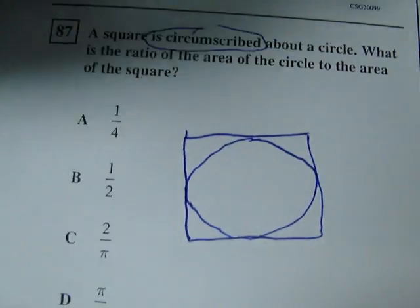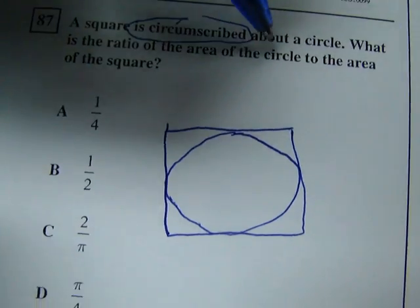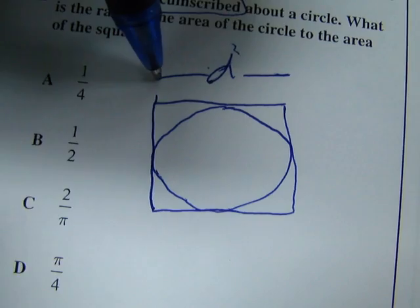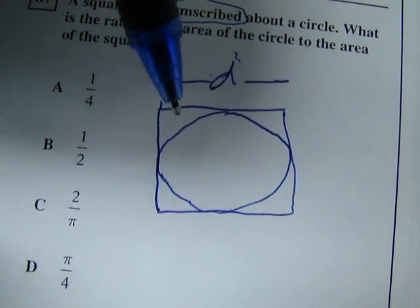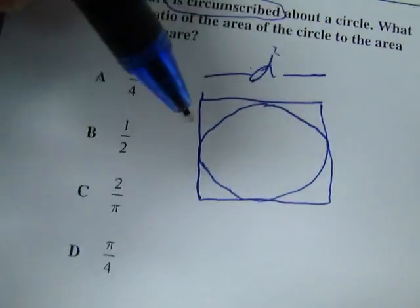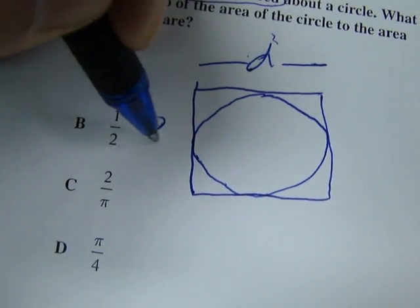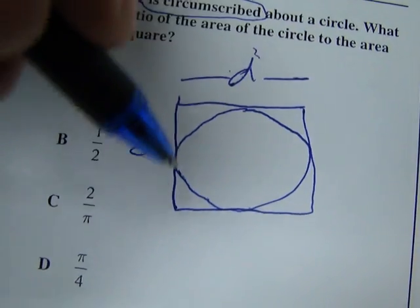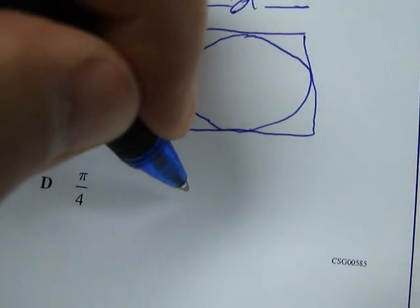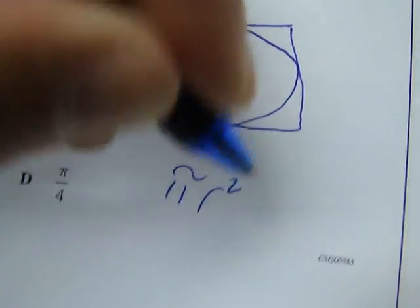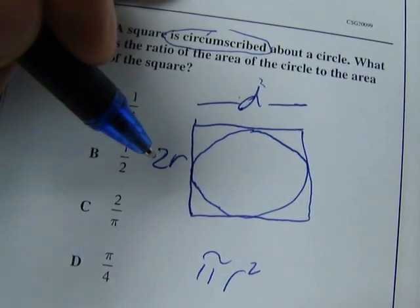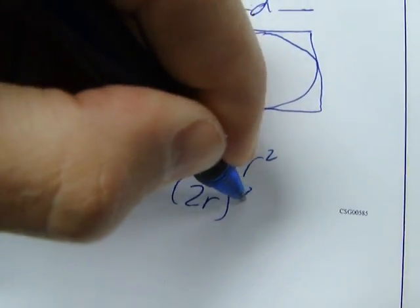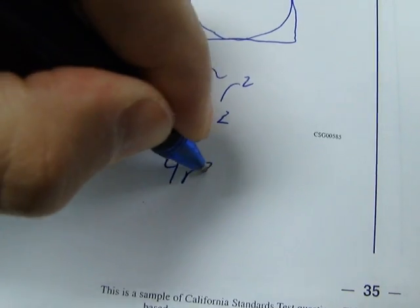Let's say that this distance here is both the side length of the square and the diameter of the circle. Okay, so if that's true, then this has to be 2r, right? The side length has to be twice the radius. So the circle is going to be pi r squared, and the square is going to be 2r squared, which equals 4r squared.